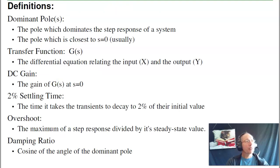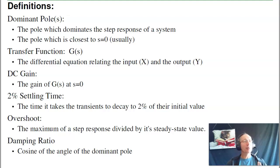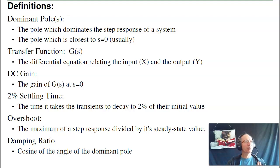A couple of definitions to start out. The dominant pole is the pole that dominates the response — which is kind of a tautology. If you look at the step response, there's an overall response that really dictates how it behaves. That's the dominant pole. It's usually the pole closest to the origin — not always, but usually.